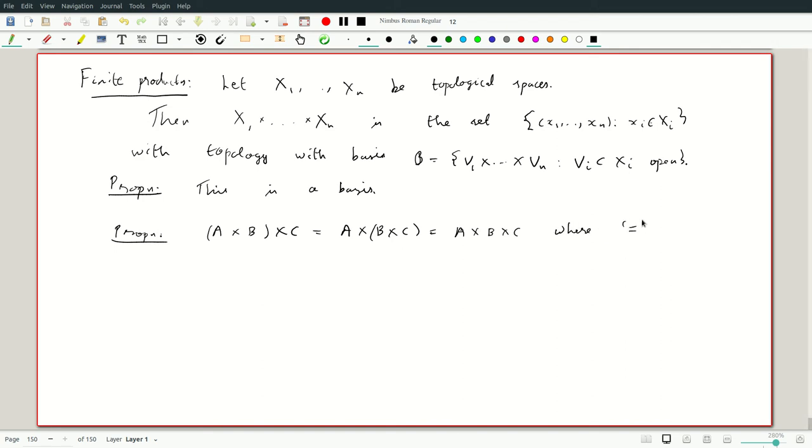Where equals means there is a canonical - you can ignore the canonical phrase - there is a canonical homeomorphism. You can just say they are homeomorphic spaces. The proof is entirely straightforward. As sets, these are all equal to each other. And you see the definition, the basis will simply give you the same basis, whether you took a cross b cross c, a cross b cross c, which are all the cuboids of the appropriate size.